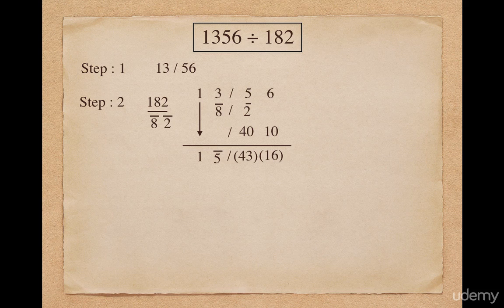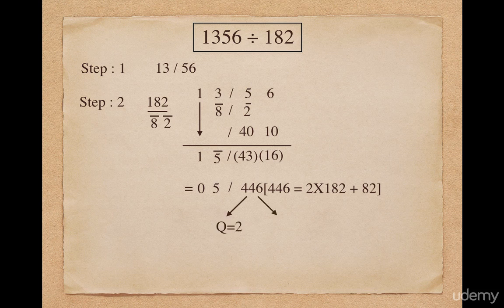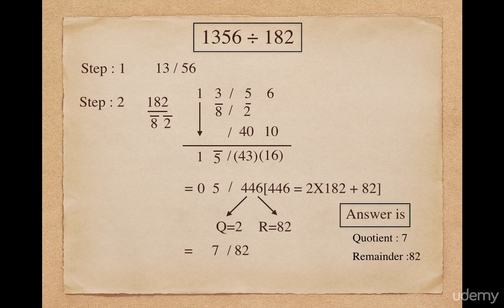In the final answer, I am getting a vinculum number, so I convert 15-bar into a normal number and it becomes 05. The final remainder is 446. However, the remainder is greater than the divisor, and the remainder cannot be greater than or equal to the divisor. So I divide 446 by 182, giving a quotient of 2 and a remainder of 82. This new quotient is added to the old quotient, so the final quotient will be 7 and the final remainder will be 82.